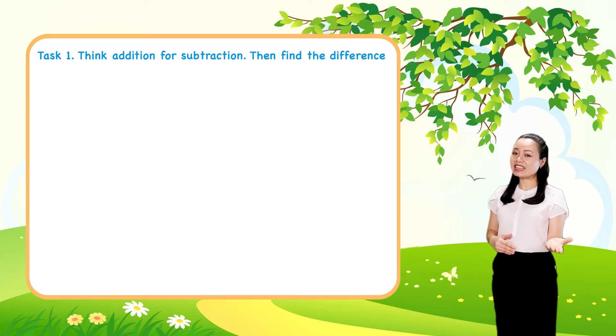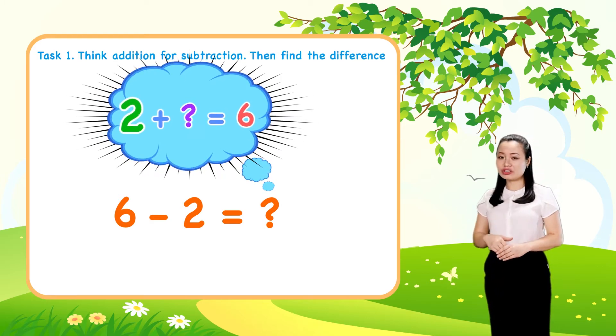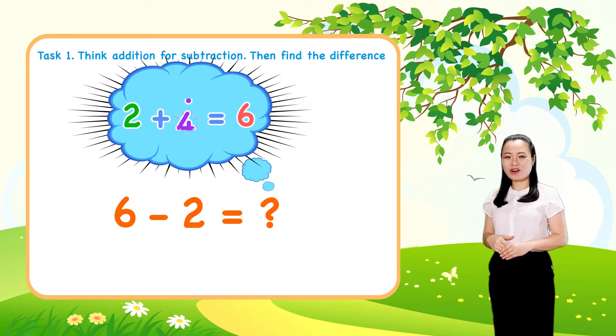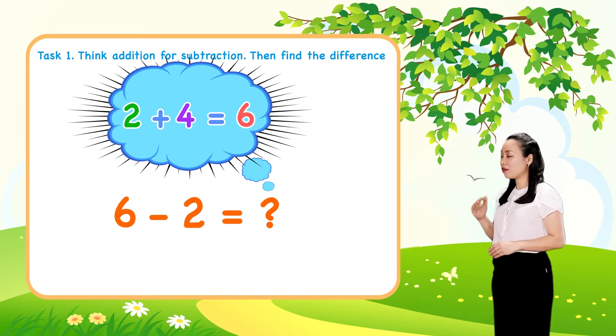Now let's find the answers together. First, think 2 plus 4 equals 6. So 6 minus 2 equals 4.